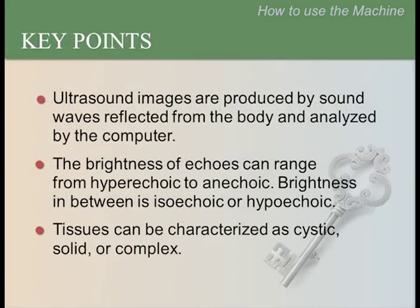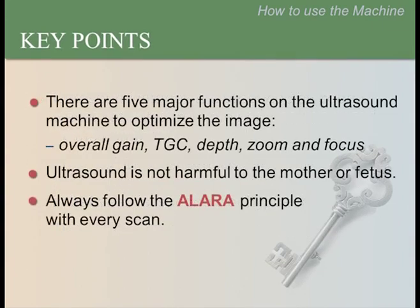To summarize the key points from this lesson: ultrasound images are produced by sound waves reflected from the body and analyzed by the computer. The brightness of the echoes can range from hyperechoic to anechoic, with isoechoic or hypoechoic in between. Tissues can be characterized as cystic, solid, or complex. There are five major functions on the ultrasound machine to optimize the image: overall gain, time gain compensation, depth, zoom, and focus. Ultrasound is not harmful to the mother or fetus — always follow the ALARA principle with every scan.